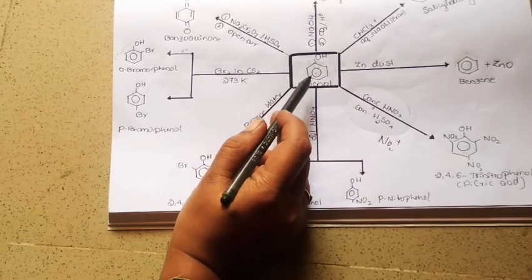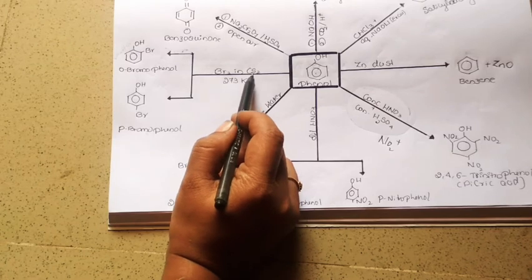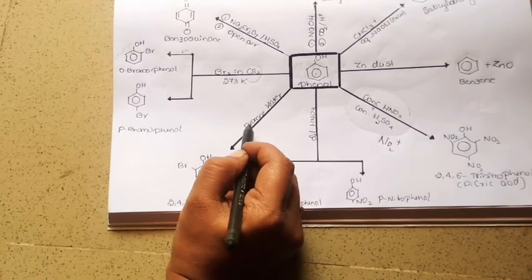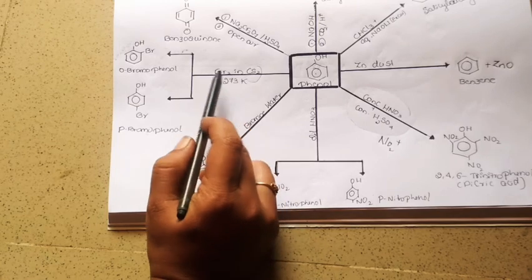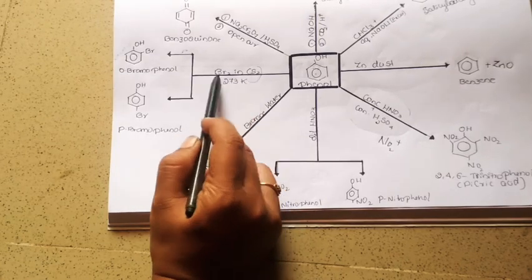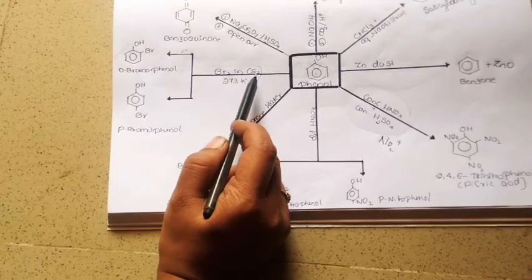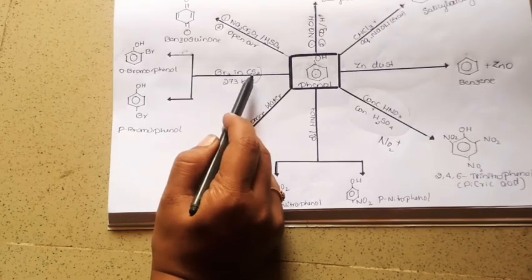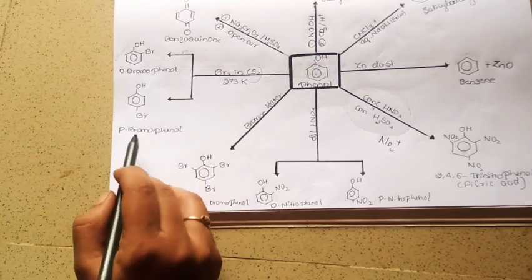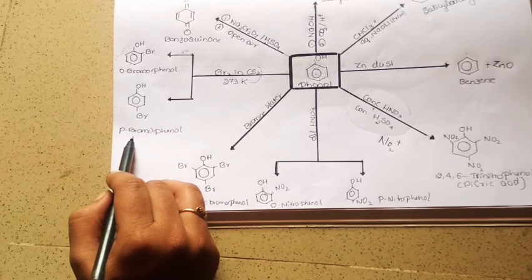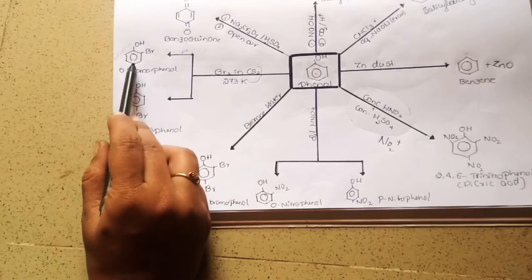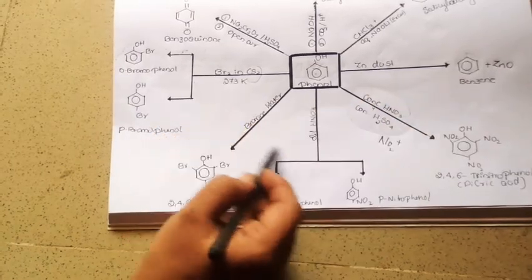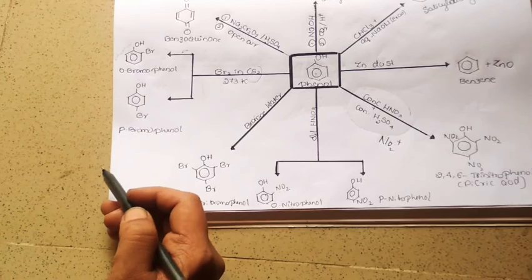When the same phenol is treated with bromine in CS₂ — carbon disulfide, which is a solvent — it results in the formation of ortho-bromophenol and para-bromophenol. Para will be the major product and ortho the minor, due to steric hindrance. You have to concentrate on this difference, and note that all these are electrophilic substitution reactions.